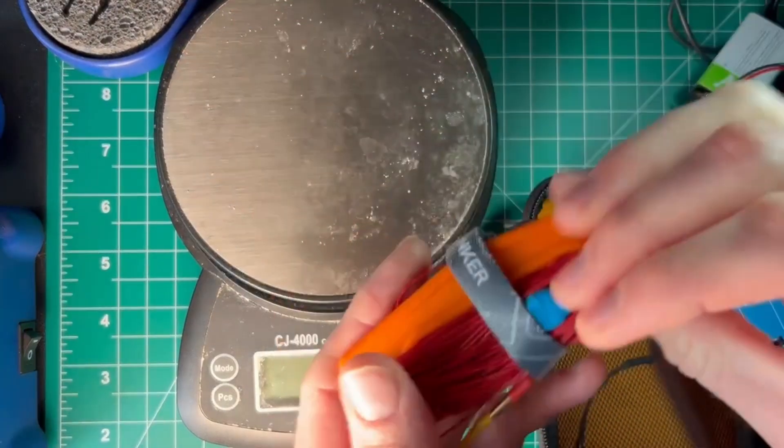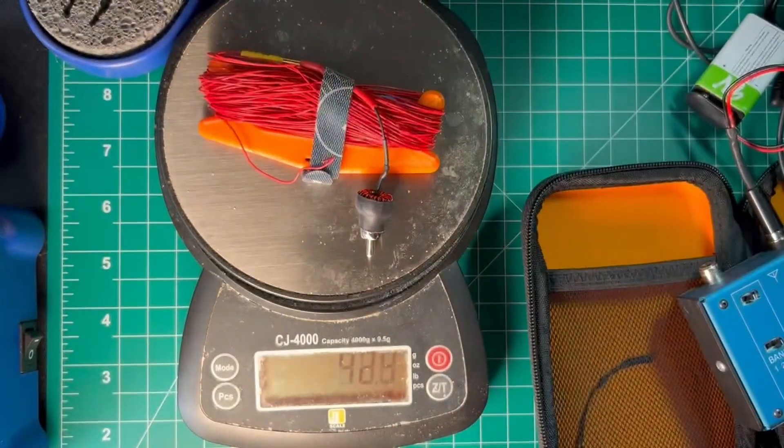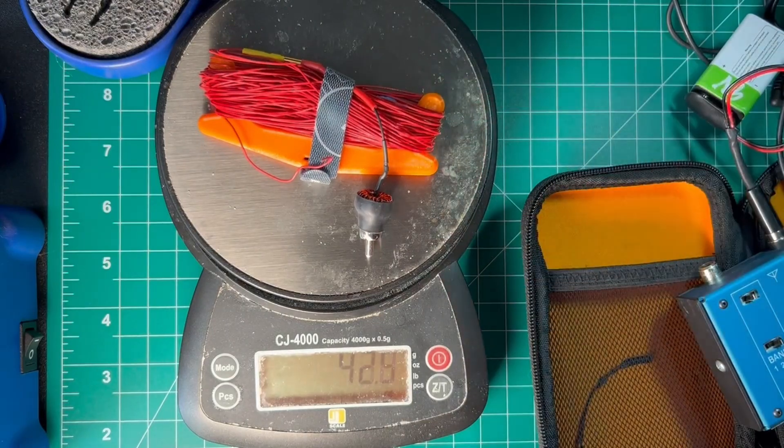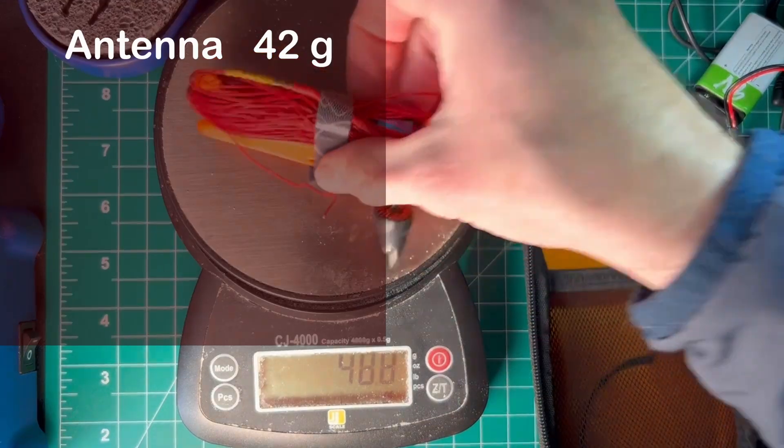So, the entire antenna, including the traps and the winder, of course, 42.5 grams.